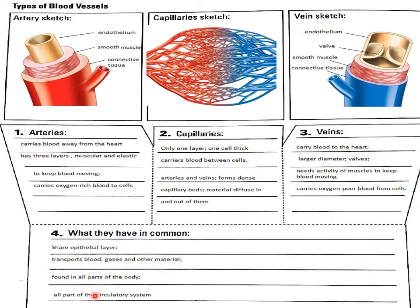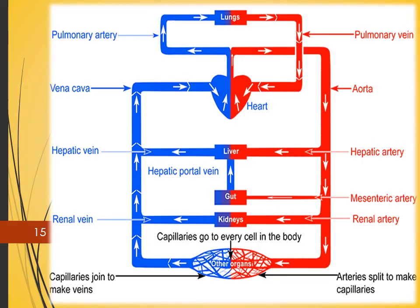All parts of the circulatory system distribute whatever is transported toward the tissues. You can see this complete sketch of the circulatory system — the organs and the heart. Blood from the heart goes to the lungs for gas exchange, and then to the upper and lower body parts and different organs.